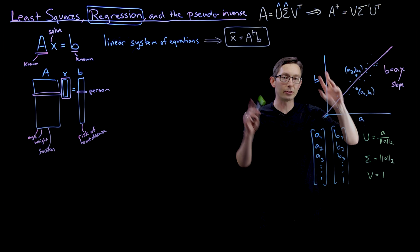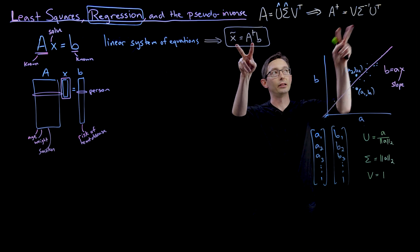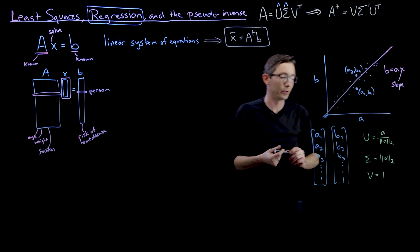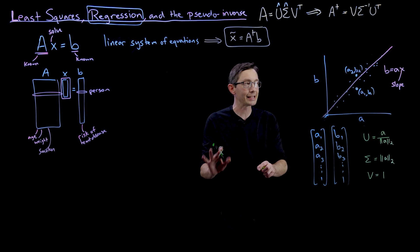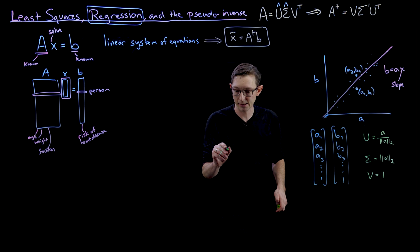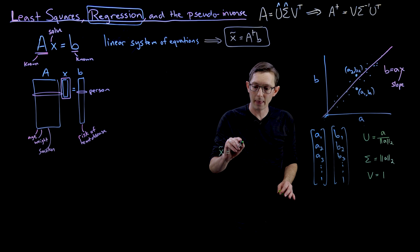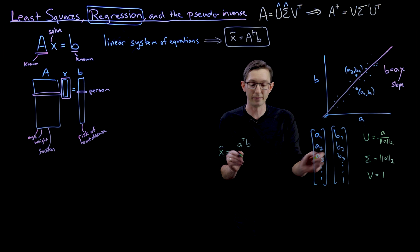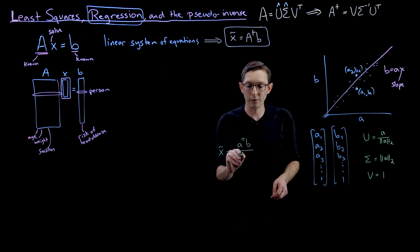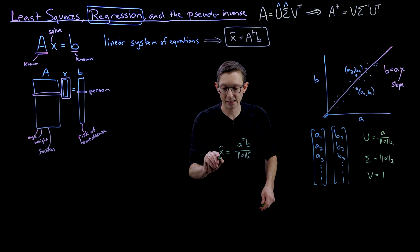And it's really easy to compute the pseudo inverse of this to solve for X using this formula here. And I'm just going to write out what the answer is. The best fit X, X tilde, that best fits this slope of this line is equal to A transpose B, so the inner product of my A vector and my B vector, divided by the norm of A squared. That is my best fit slope.